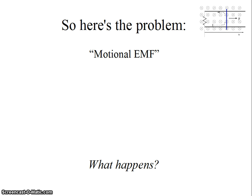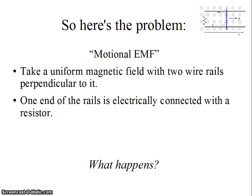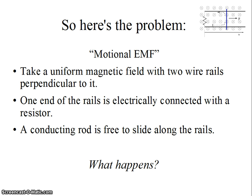The problem, called Motional EMF, is one of those where I just laid it out with a what happens. It has a uniform magnetic field with two wire rails perpendicular to it. I did not draw a picture when I stated this problem. One end of the rails is electrically connected with a resistor, and a conducting rod is free to slide along the rails. I push, or I often say pull, the rod away from the resistor. The final picture is in the top right corner now, but I was trying to encourage you to think about how to draw the picture when you start a problem.